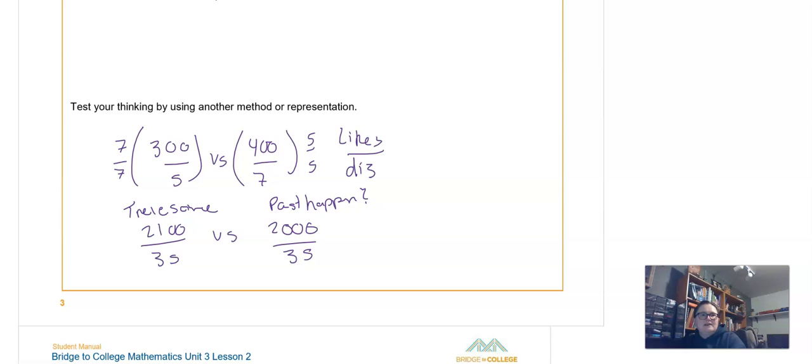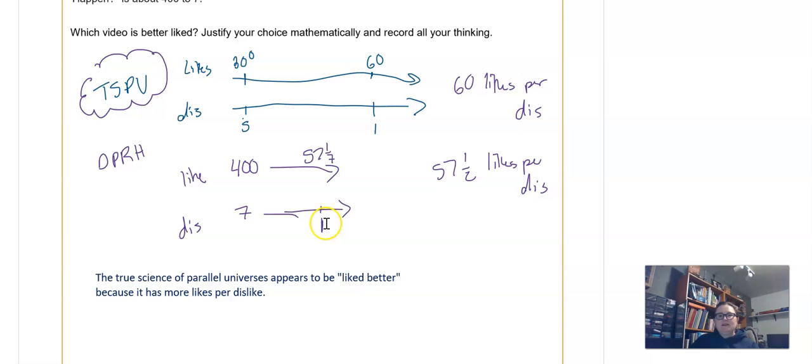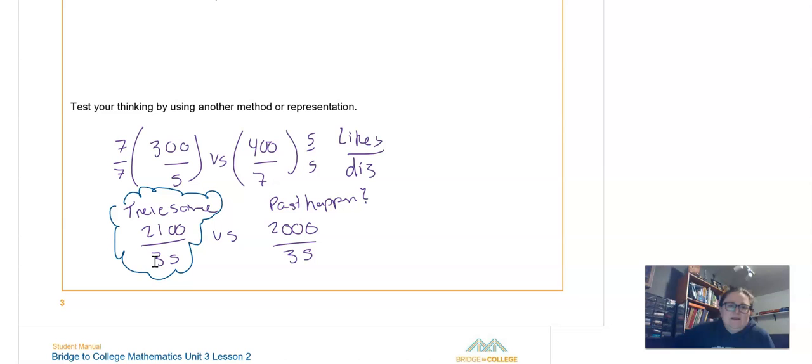So again, it should be pretty clear to see that we have more likes on the parallel universes video. Because 2,100 is bigger than 2,000, and our denominator's the same. So, totally different numbers that you end up with, but it's still a way to compare it. The important part is that we have a common denominator. Here we were getting down to 1 in our denominator and finding our unit rate. Here we're making the denominator the same, but not 1, but this way we can have whole numbers to compare. It's not that much more liked, but it is more liked.